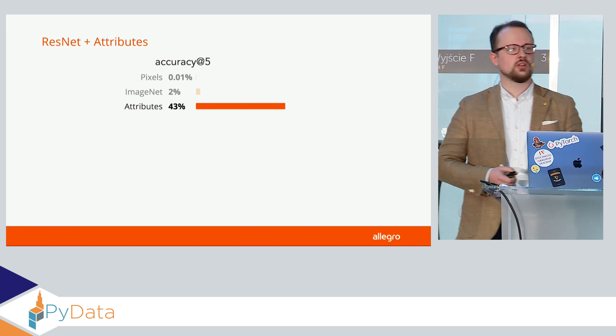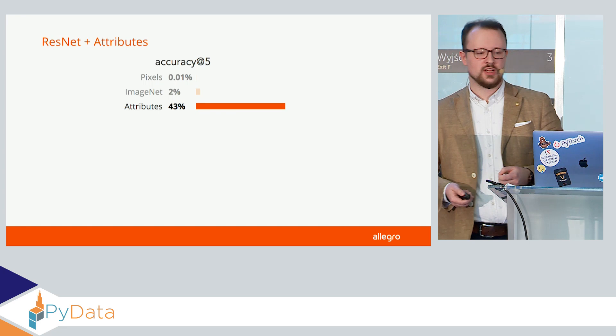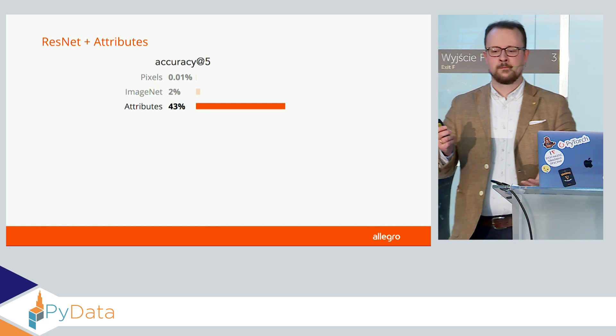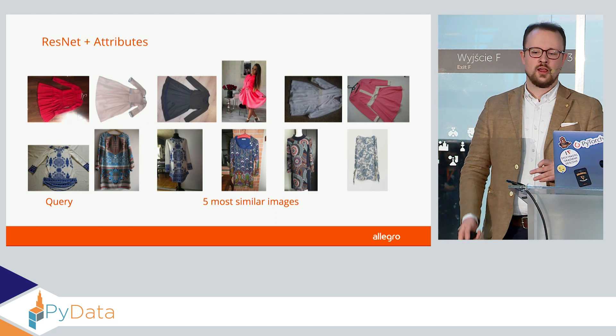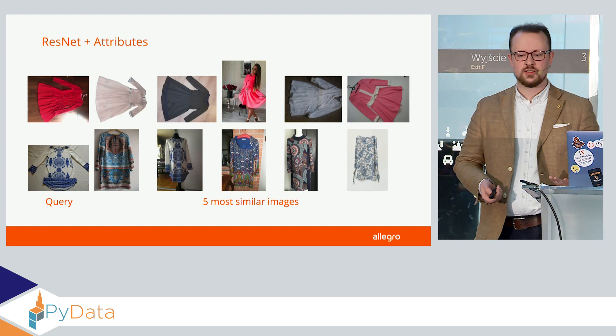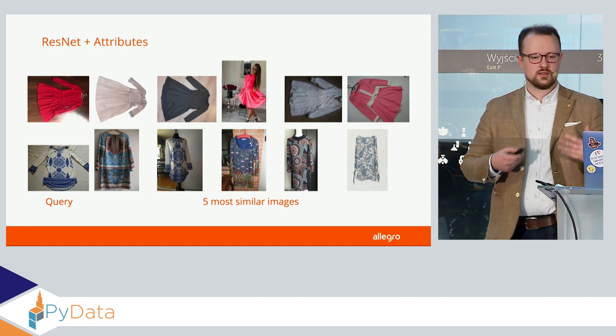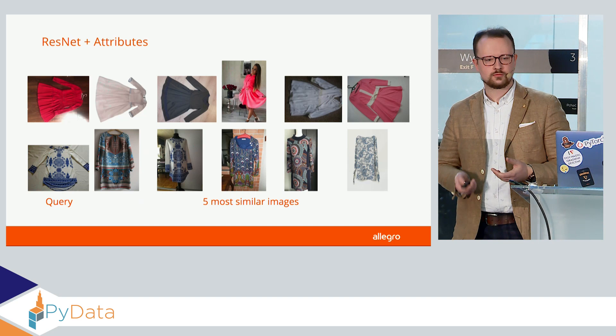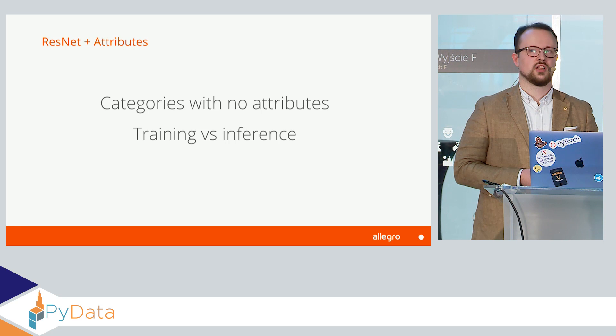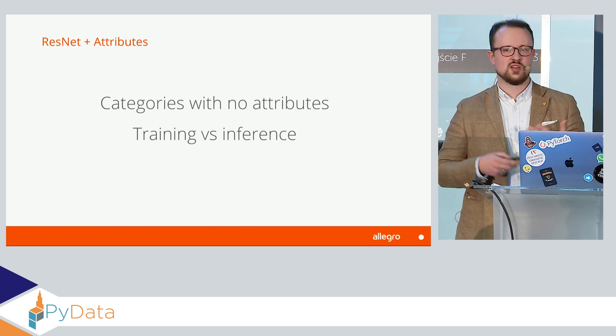The results are still really good — we get accuracy of 33%, so I'm quite happy with that. But how does it translate to actual image search? The results are not as good as I had hoped. We can see that we get a dress of overall the same cut, the same neckline, length of sleeves — we can even find the Chinese porcelain dress — but it's not really visually similar. Also, we have lots of categories with no attributes, so we wouldn't be able to scale this approach to notebooks or phones.